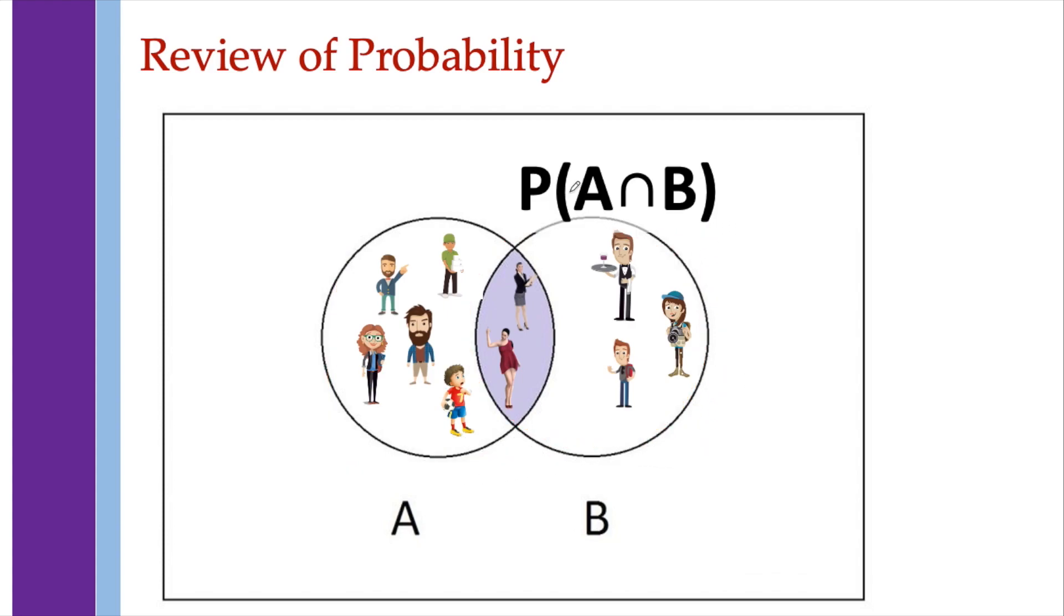How about the probability of getting a person who is in A and at the same time a person in B? That is 2 out of 10.